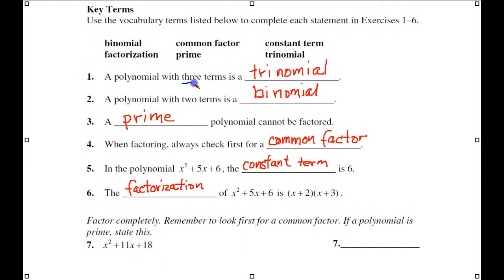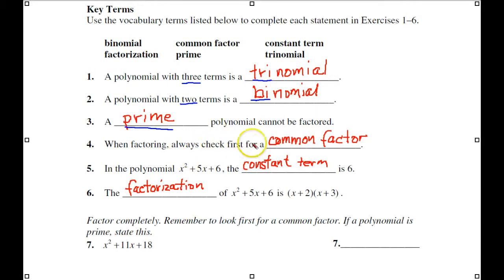A polynomial with three terms is a trinomial — tri is the prefix for three. A polynomial with two terms is a binomial. When we get a trinomial, sometimes it cannot be factored; those that cannot be factored are said to be prime. The first step in factoring is to put it in standard form, then check to see if there's a common factor that can be taken out of each term. The last term in standard form — ax squared plus bx plus c — is the constant term c.